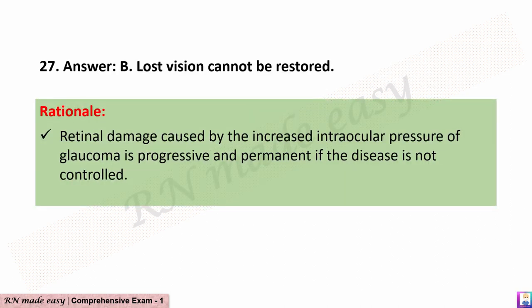The correct answer is B: Lost vision cannot be restored. Rationale: Retinal damage caused by the increased intraocular pressure of glaucoma is progressive and permanent if the disease is not controlled.